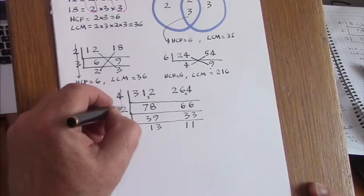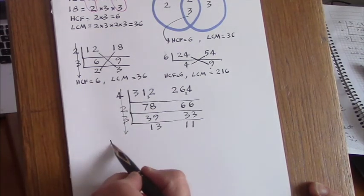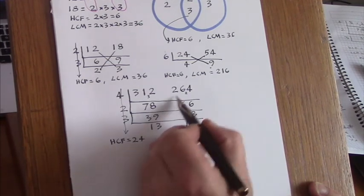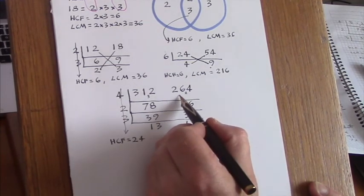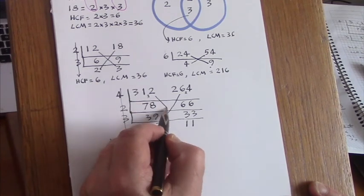Multiplying vertically here, 2 times 3 times 4 gives the HCF, 24, and we can choose whether to multiply 2, 6, 4 by 13, or 3, 1, 2 by 11.